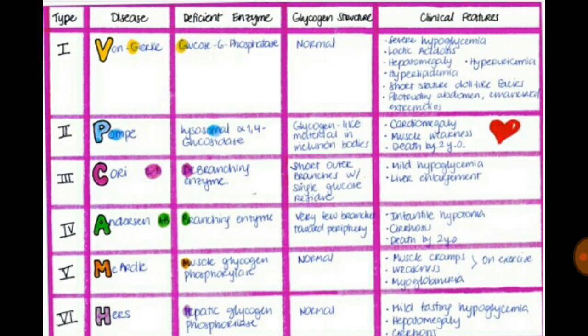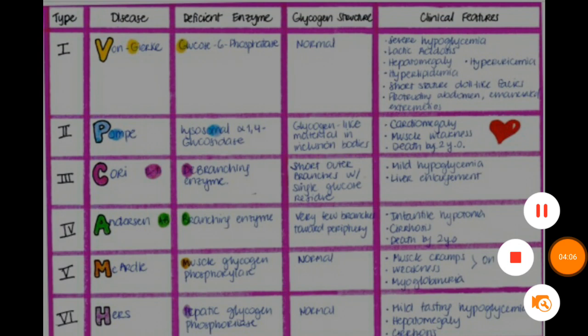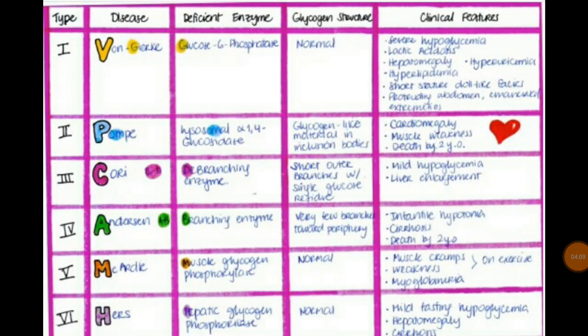Type 2 is Pompe disease. Pompe is lysosomal alpha-1,4-glucosidase deficiency — correlate the 'o' in Pompe with 'o' in lysosomal. The key features asked in exams are cardiomegaly, muscle weakness, and death by two years of age. Glycogen structure shows glycogen-like material in inclusion bodies.